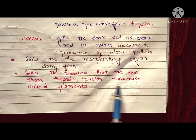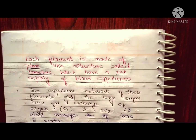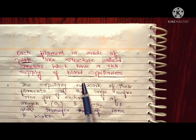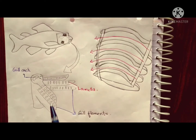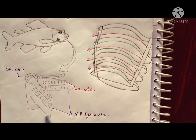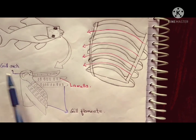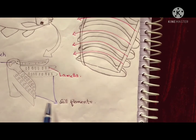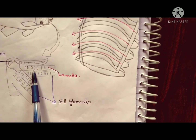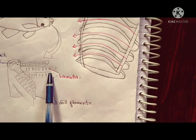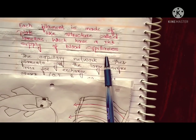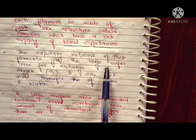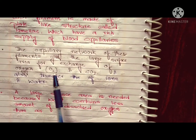Gills are tissue made up of short, thread-like protein structures called filaments. This filament is made up of plate-like structures called lamellae, which have a rich supply of blood capillaries. This is a V-shaped structure. The filaments and lamellae give the gills a large surface area for the exchange of O2 and CO2.